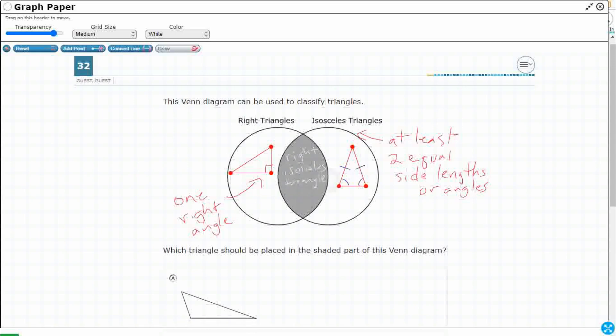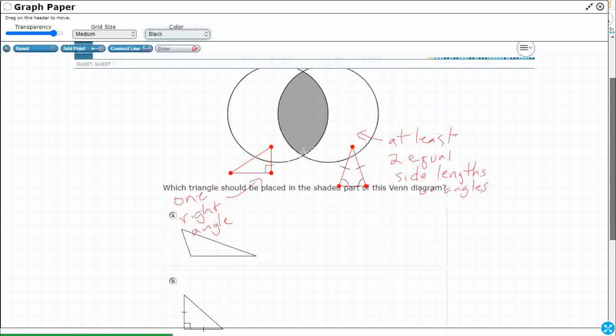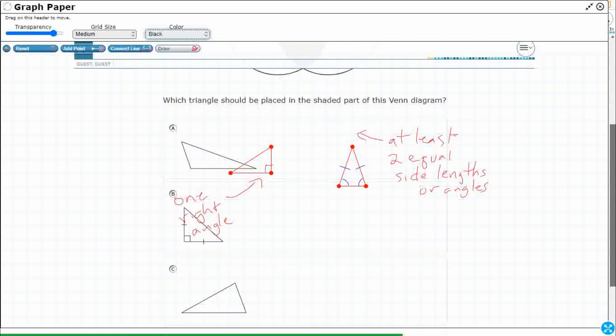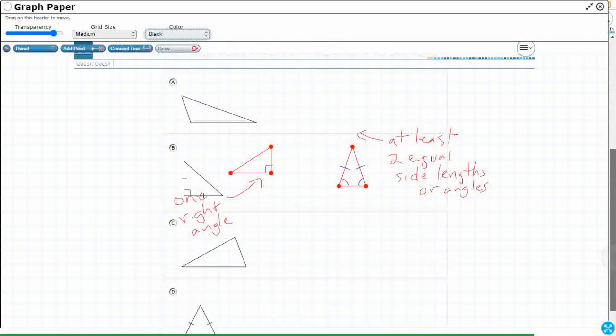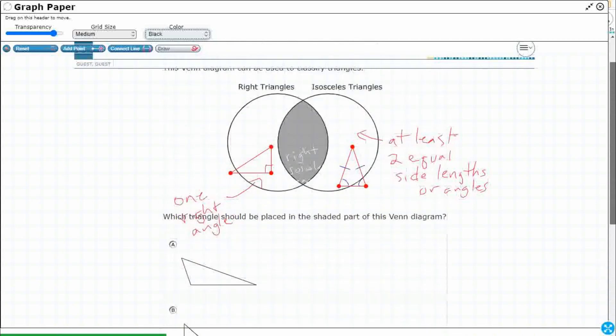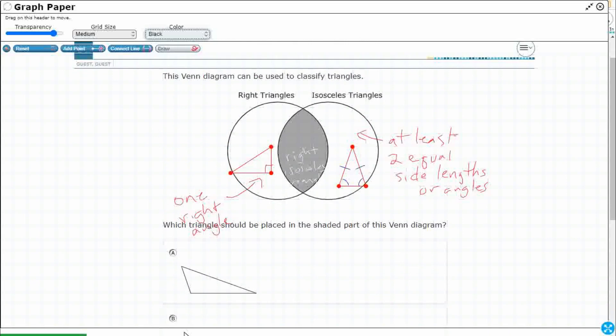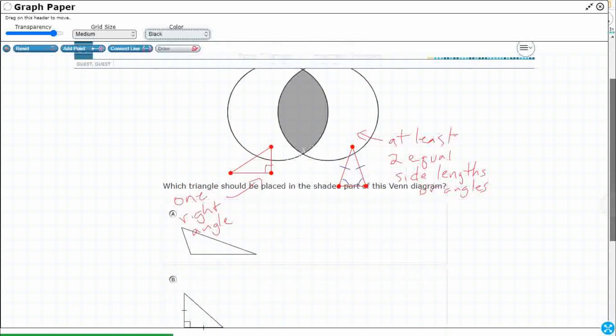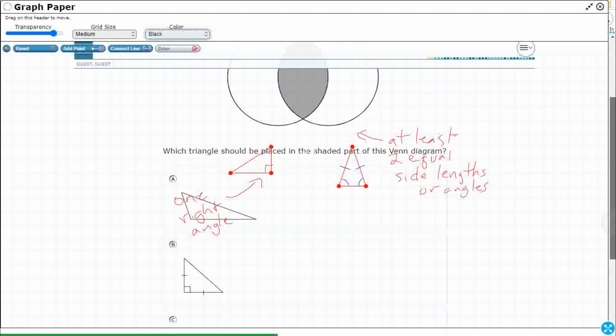Alright, so our four answer selections are simply going to be four different types of triangles. We just have to look. So is it a right triangle? And is it isosceles? That's our check. And we're going to have to scroll down. Unfortunately, everything that we've written kind of follows us, but that's fine. So we're looking for right, we're looking for isosceles. Let's check out A.